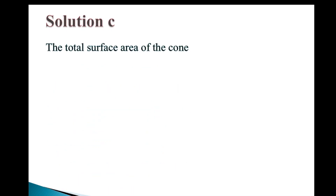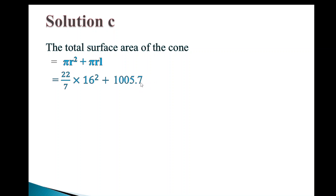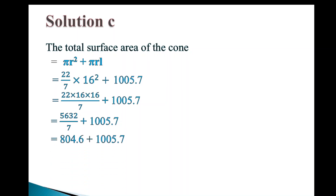Solution C: The total surface area of the cone is πr² + πrl. Pi is 22/7, and the radius is 16. The curved surface area πrl has already been calculated as approximately 1005.7 centimeters squared. Adding πr² to that, we arrive at a total surface area of approximately 1810.3 centimeters squared. That is how to calculate the curved surface area and total surface area of a cone.